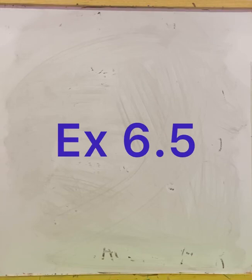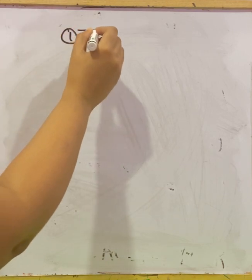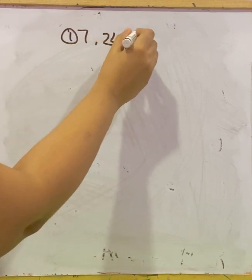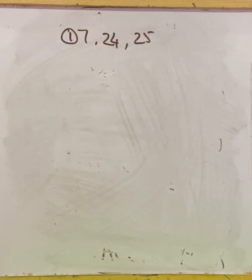Namaste. Today we will do problems based on Pythagoras theorem. Let us move to Exercise 6.5: sides of triangles are given below — determine which of them are right triangles. In case of a right triangle, write the length of its hypotenuse. The first set of sides is 7 cm, 24 cm, and 25 cm.